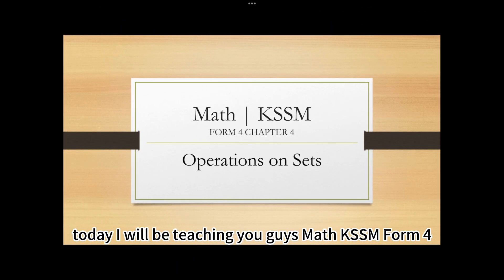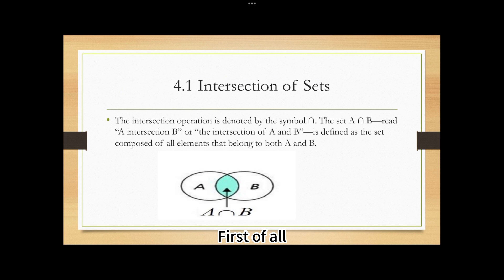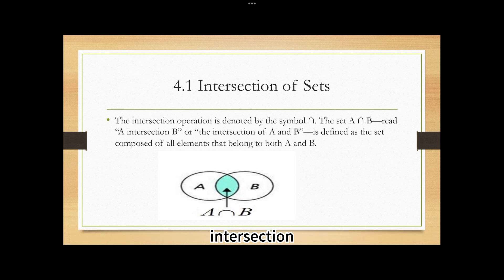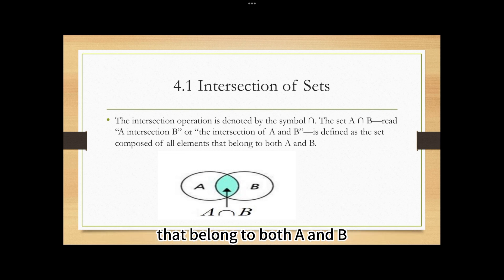Hello everyone. Today I will be teaching you Math KSSM Form 4, Chapter 4, which is Operations on Sets. First of all, what is the intersection of sets? The intersection operation is denoted by the symbol ∩. We read it as A intersection B, or the intersection of A and B. It is defined as the set composed of all elements that belong to both A and B.